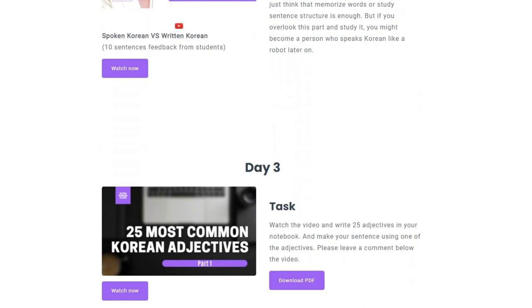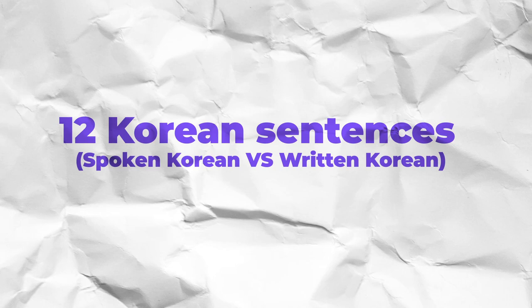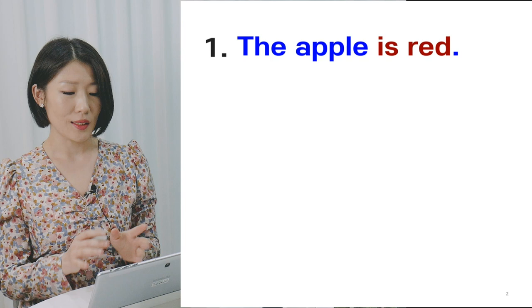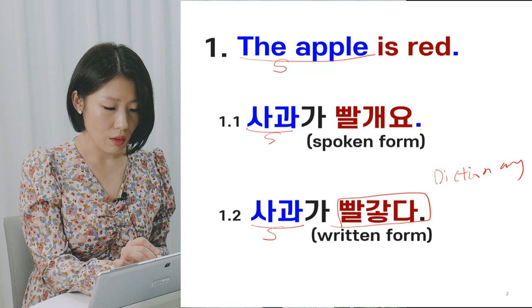It will be uploaded twice a week and you can check the full daily schedules on my website. You can also download PDF files. Now smash the thumbs up button and leave comments down below. Let's get started! The first sentence is 'The apple is red.' The spoken form is 사과가 빨개요 and the written form is 사과가 빨갛다. When you see 'is red' in English, in Korean we just use one word.